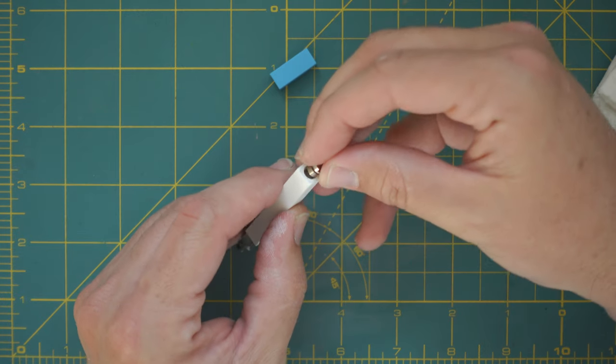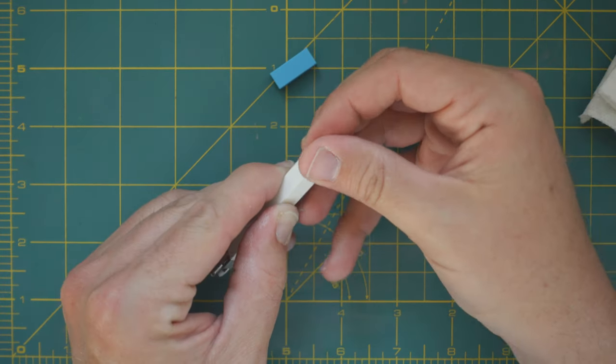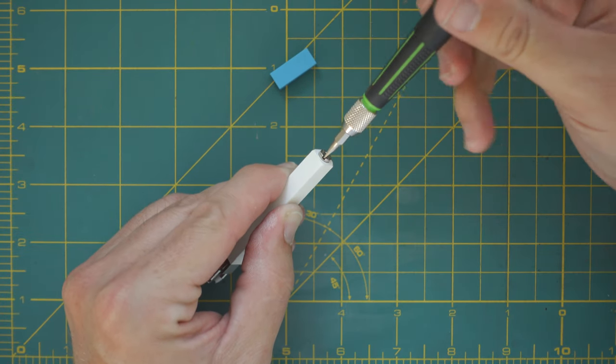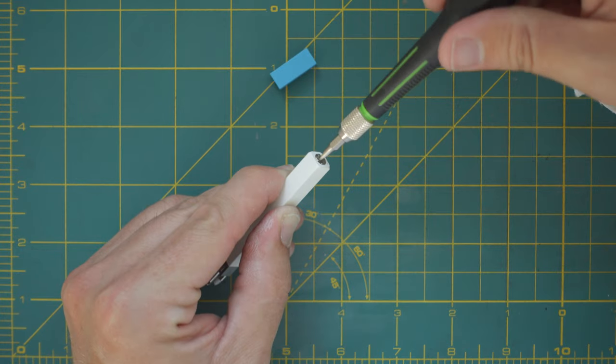After you fill the lighter with lighter fluid you just carefully screw the screw back in making sure that it's nice and tight. Although not too tight because you do need to be able to open it again.